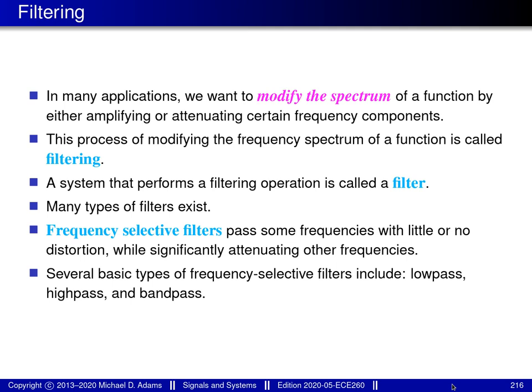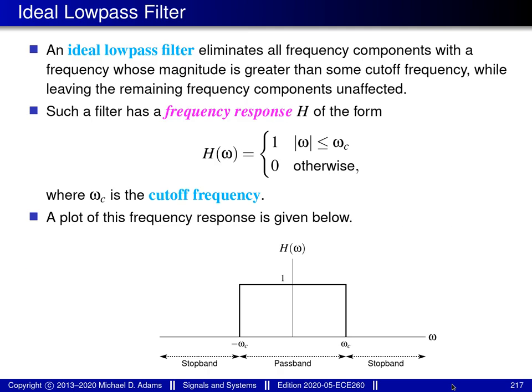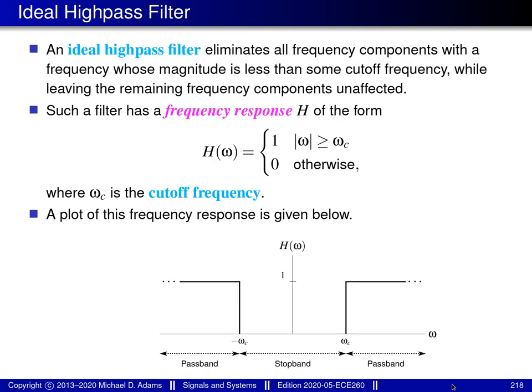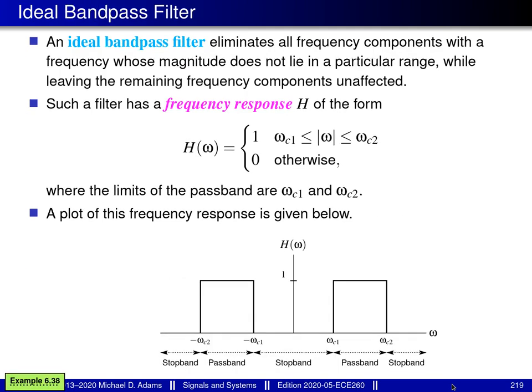In the earlier unit on Fourier series, we covered the material on this slide, and this slide, and this slide, and this slide, with the exception of the example mentioned in the bottom left corner of the slide. So what I'd like to do at this point is consider example 6.38.